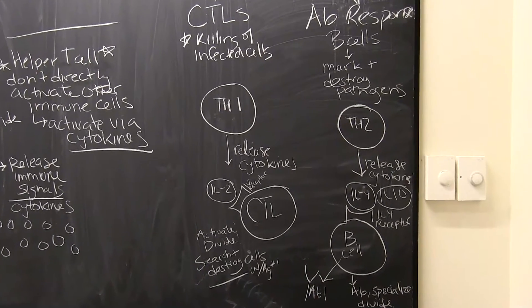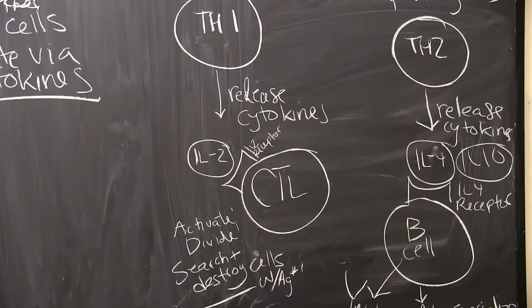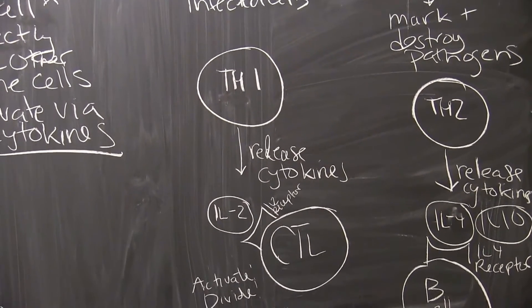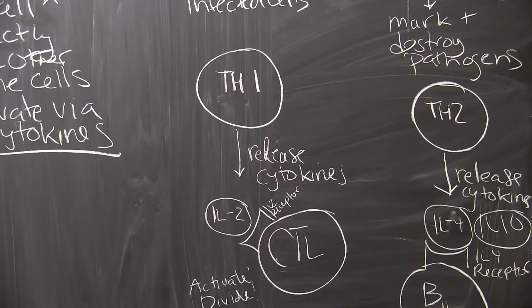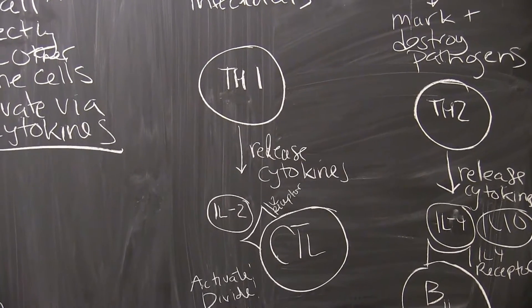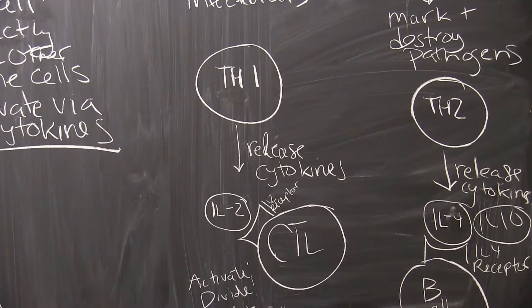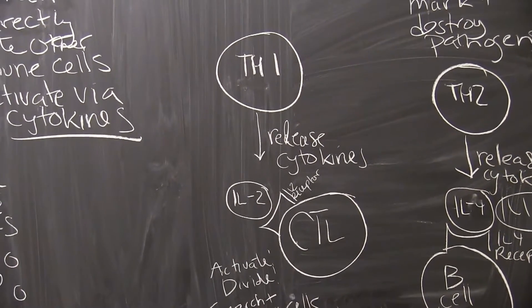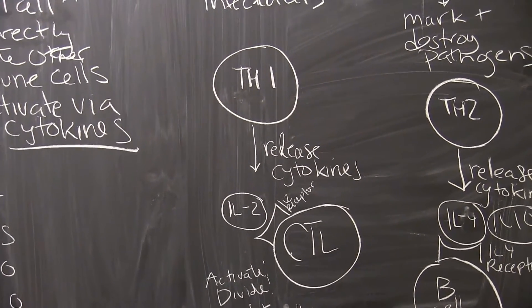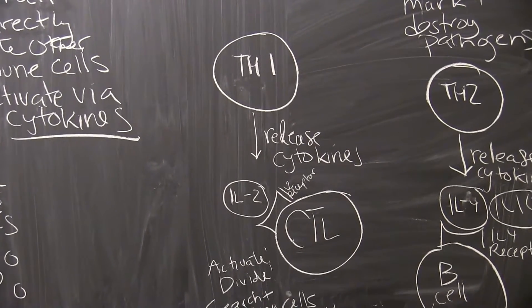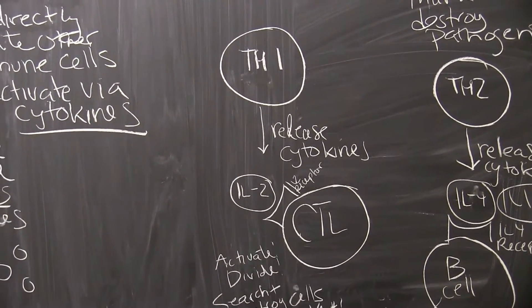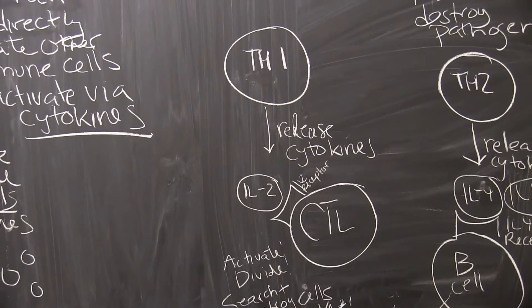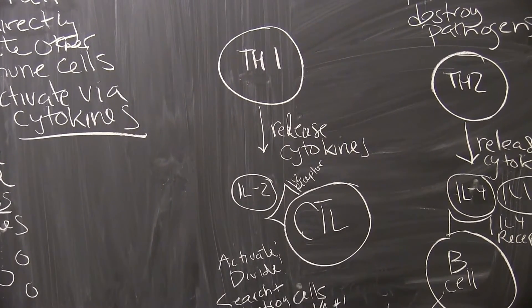If you remember from the previous episode, we learned that helper T-cells do not directly activate other immune cells. They activate other immune cells by releasing cytokines. In the case of helper T-cells type 1, they release cytokines that help killer T-cells divide, specialize, and get activated to go kill their target infected cells.